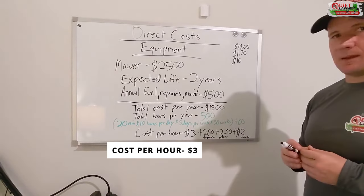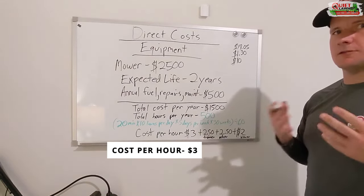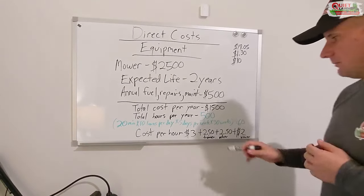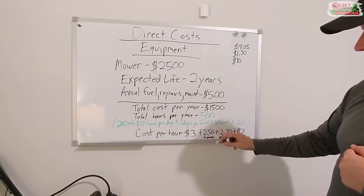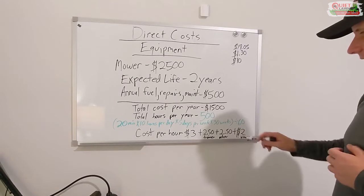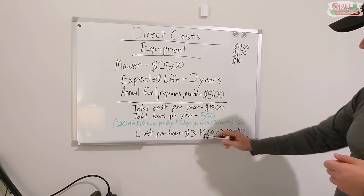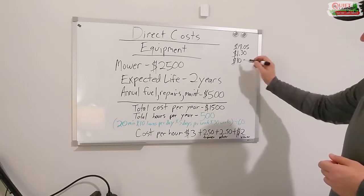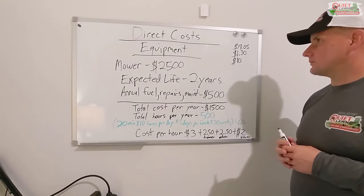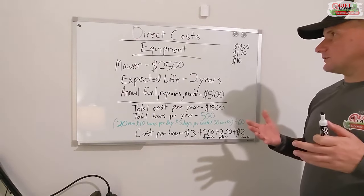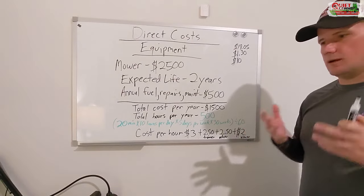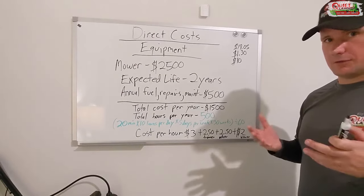I'm not going to run through the examples of the other pieces of equipment like your string trimmers, blowers, and edgers because it's exactly the same process. But let's plug in some numbers quickly — $2.50 per hour for the trimmer, $2.50 for the edger, and $2 for the blower. That arrives at a total of $10 per hour for our equipment. So we've got those direct costs. Now let's go and calculate our indirect cost or overhead.